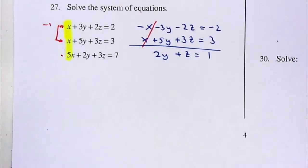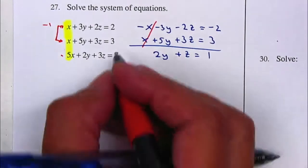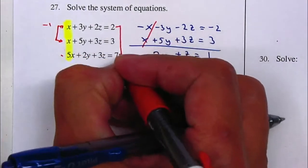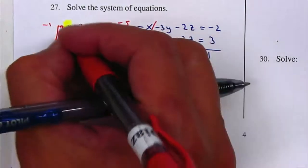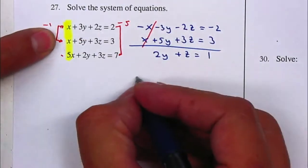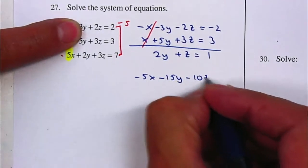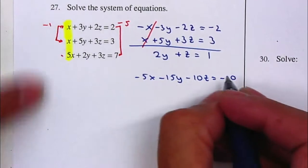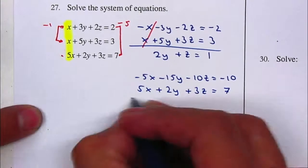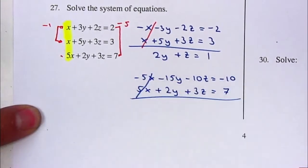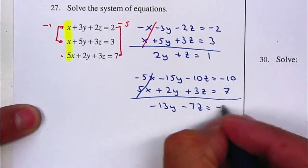Now I want to cancel the X's again, using the first and last equations. I need to multiply the first equation by negative five so the X's cancel. That gives me negative 5X minus 15Y minus 10Z equals negative 10. The last equation stays the same. So the X's cancel, giving negative 13Y minus 7Z is equal to negative three.